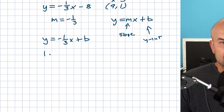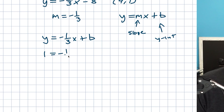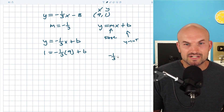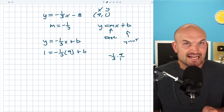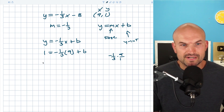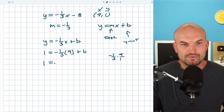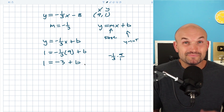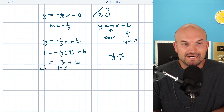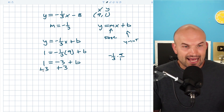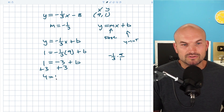So I replace y with 1 and x with 9: 1 equals negative one-third times nine plus b. To multiply the fraction, I rewrite nine as nine over one. Three divides into nine three times, and three times negative one is negative three. So 1 equals negative three plus b. Adding three to both sides gives b equals four.